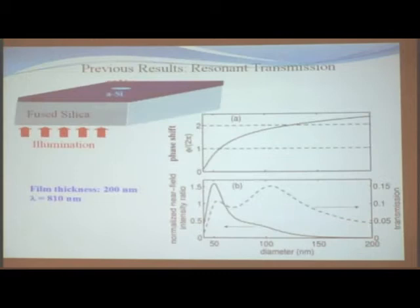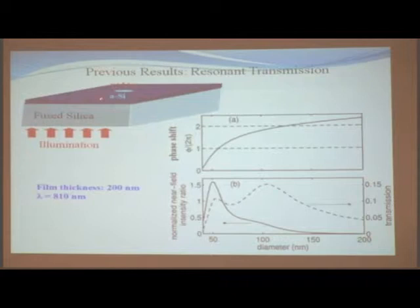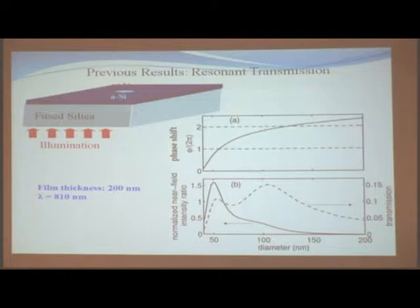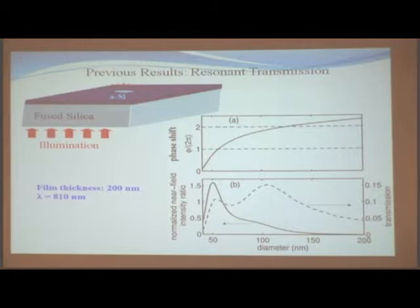Last year we got results like this: illumination going through silicon. The hole is filled with silicon. When the diameter of the hole is about 59 nanometers, there is a peak — that means at this position there is the most light going through the hole. The phase shift in response at this point is about theta over 2 pi.